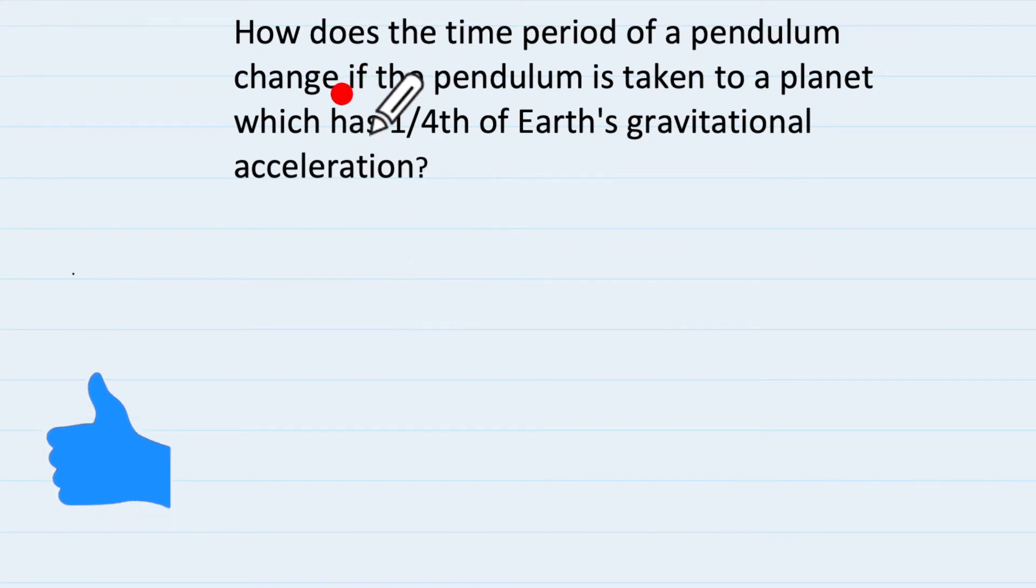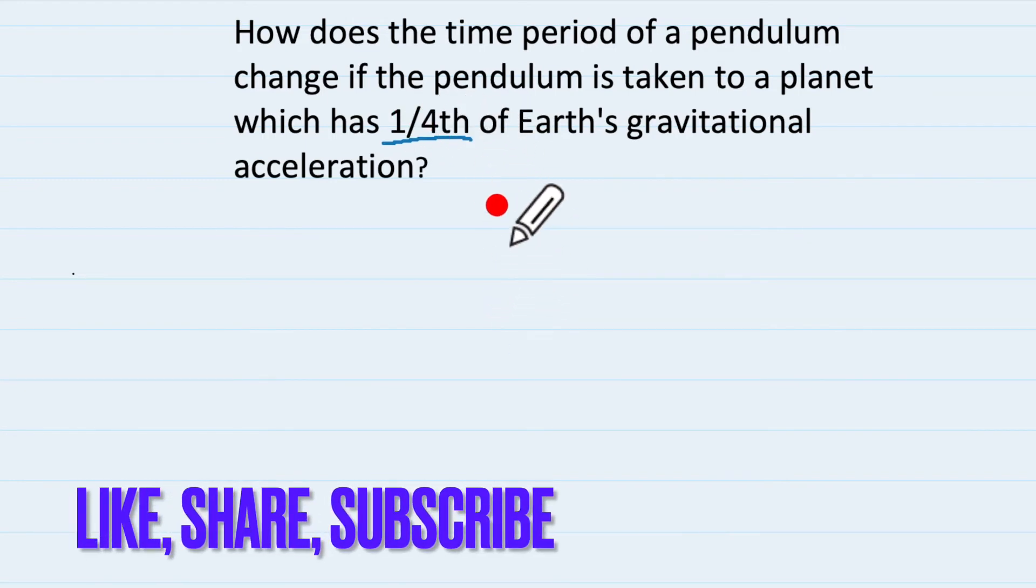Secondly, if your question asks how does the time period of a pendulum change if the pendulum is taken to a planet which has one-fourth of Earth's gravitational acceleration. So if we take gravitational acceleration for the Earth as g, the planet will have g as one-fourth of it that means g upon 4.